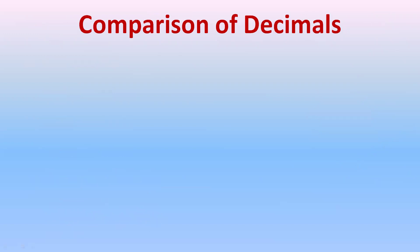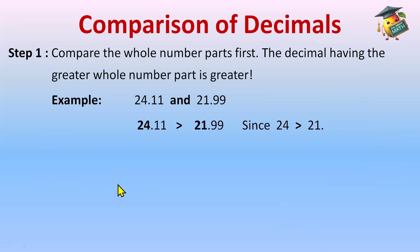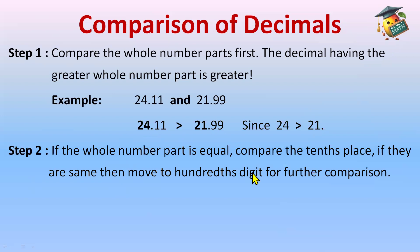Now let's look at comparison of decimals without converting into like decimals — the easiest method. You don't need to add any zeros, so you can do it mentally. Step one: compare the whole parts first. The decimal with the greater whole part is the greater decimal. For example, 24.11 versus 21.99 — 24 is greater than 21, so 24.11 is greater. We don't need to check the decimal part at all.